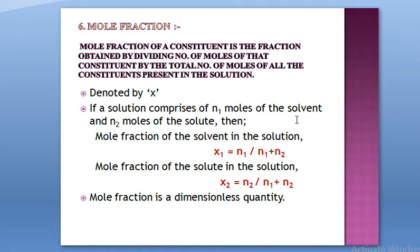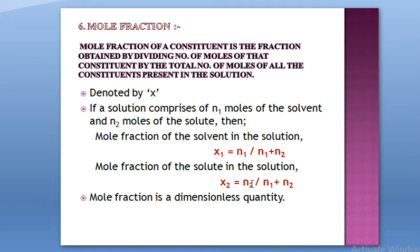Suppose a solution comprises n1 moles of the solvent and n2 moles of the solute — a binary solution with just two components. Then the mole fraction of the solvent, x1, equals n1 divided by (n1 + n2). Similarly, the mole fraction of the solute, x2, equals n2 divided by (n1 + n2), which is the total number of moles of all components present in the solution.